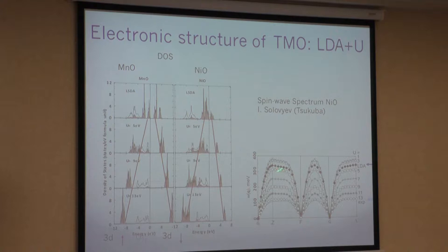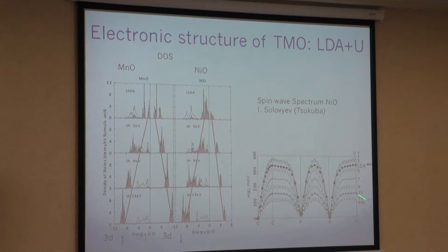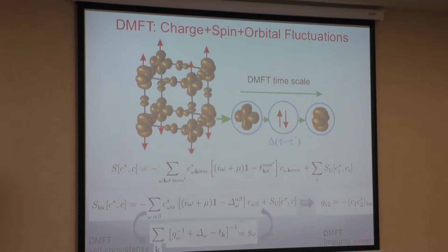The same happens in magnetic oxides. If you look at the exchange interaction, you can measure the spin wave spectrum. Experiments are shown at the bottom. If you start from LDA, you overestimate the energy of spin wave excitations by a factor of about five. But if you increase U, you can almost come back to the experimental magnon spectrum. You can calculate the magnon spectrum for this compound with some U of order 10 electron volts.